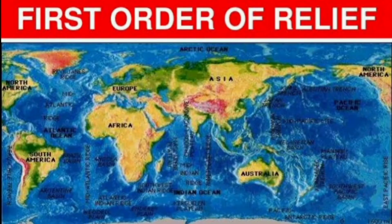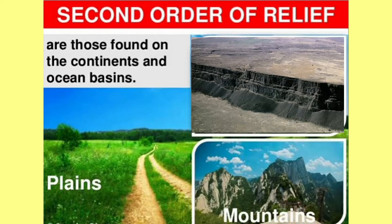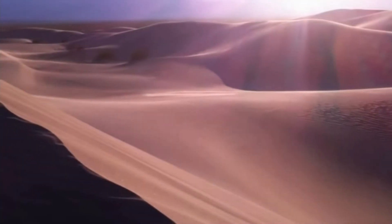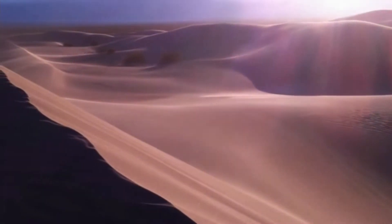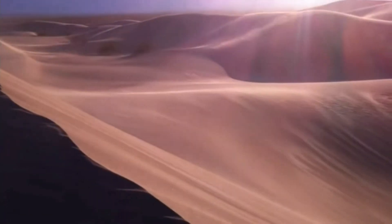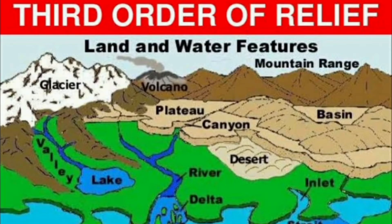The first order landforms are oceans and continents. The second order landforms are mountains, plains, and plateaus. External forces like water and air wear away the surface of rocks and mountains, transport the worn-out particles, and deposit them in lowlands and basins. This shaping of landforms by wind and water is called third order landforms.